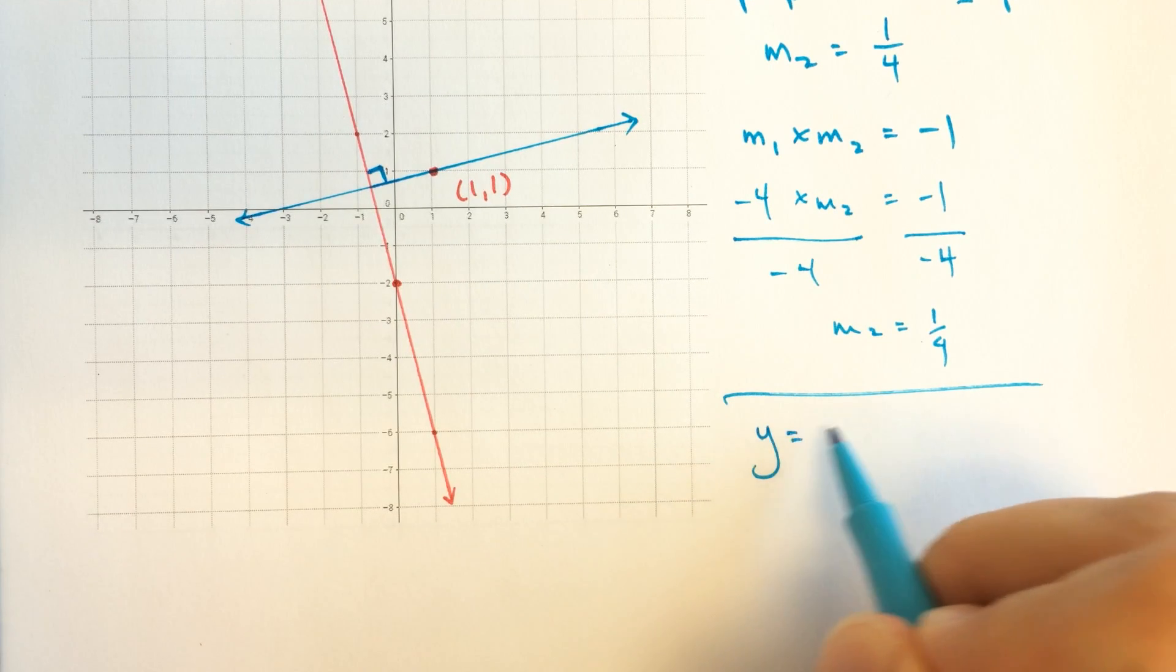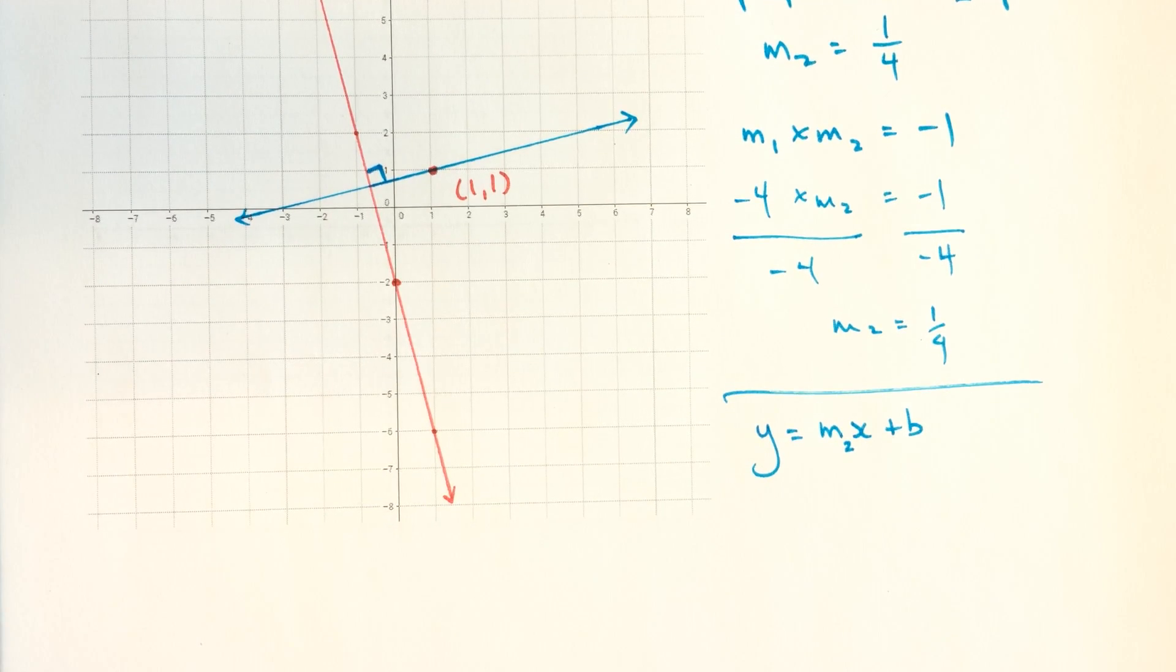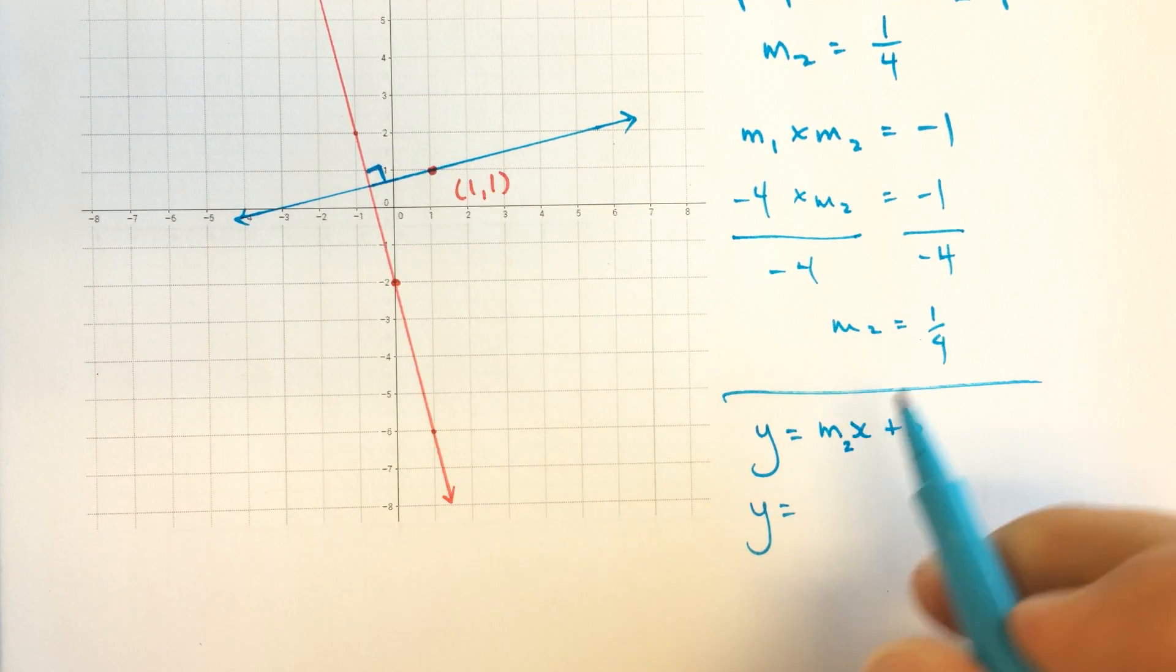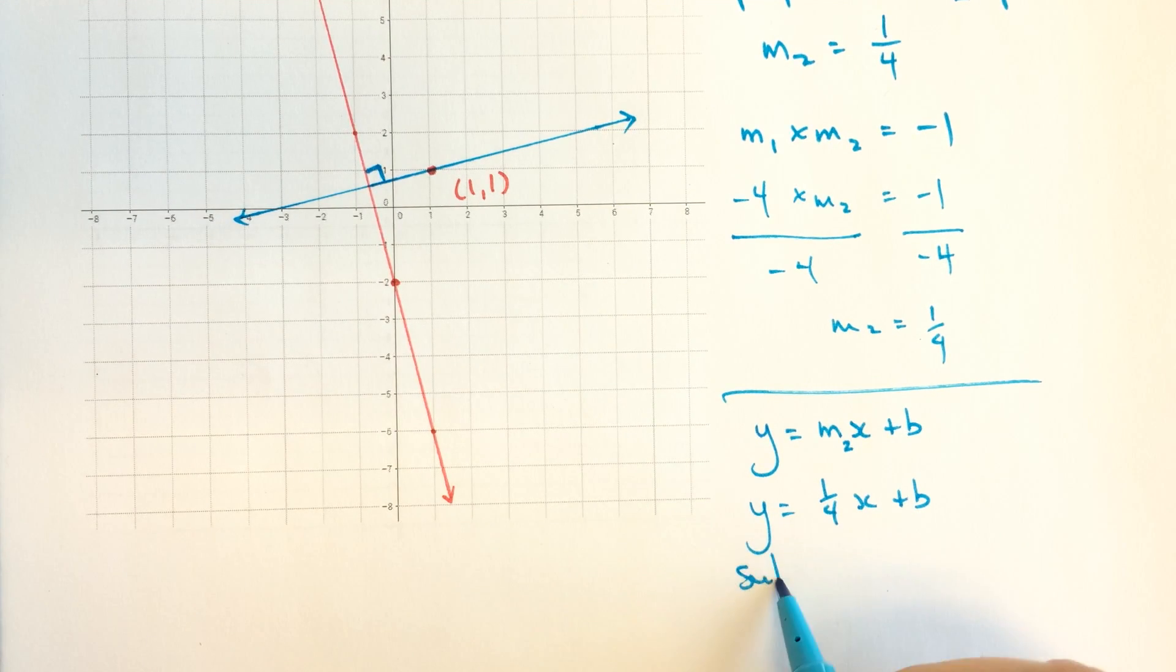So our general equation is y equals mx plus b, and we specifically are talking about m2, the second slope that we've got up here, 1 quarter. So filling that in, we get y equals 1 quarter x plus b, and we're going to substitute the point that we know should be on that line and satisfies the equation. Substitute (1,1).